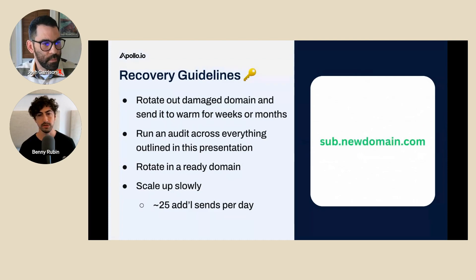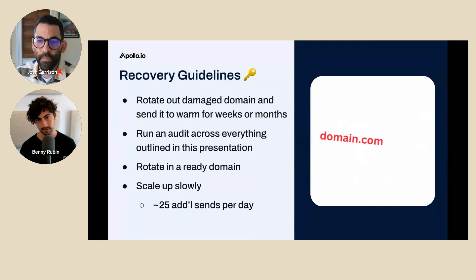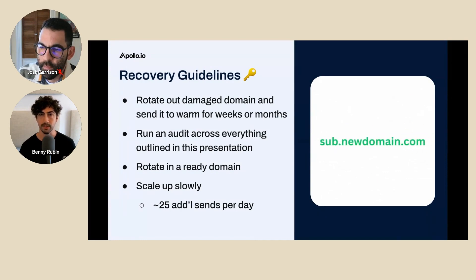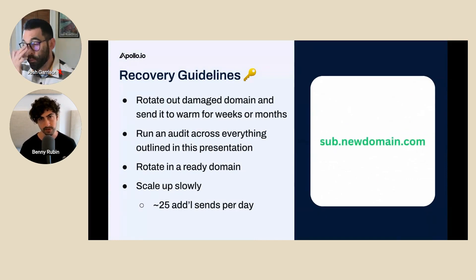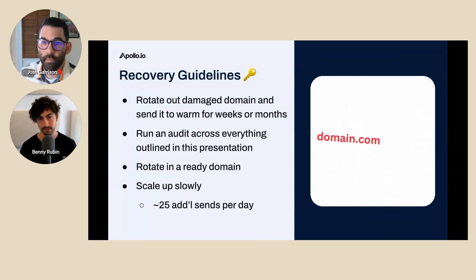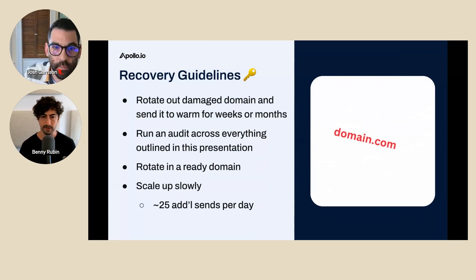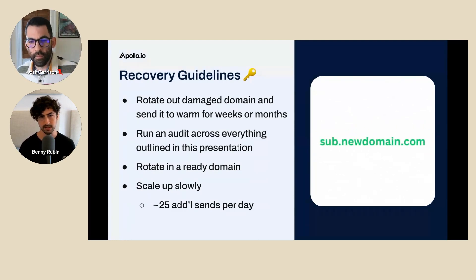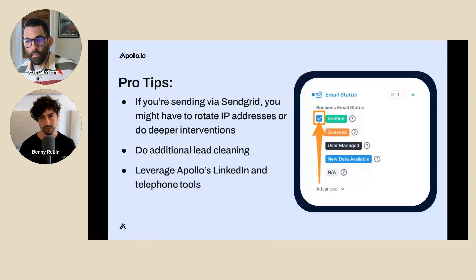You need to rotate in a ready domain — one that's properly aged and warmed — and set it up in Apollo to send. Then you need to scale up very slowly, adding 25 additional sends per day and sending to your most receptive audiences first.